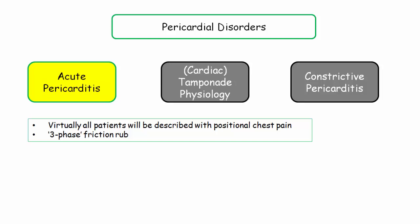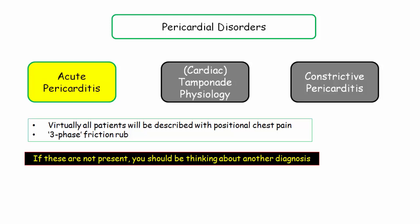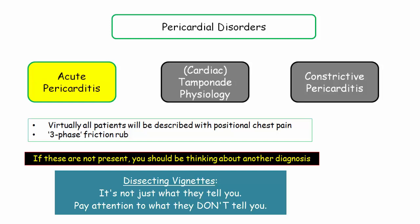So this is the key language of acute pericarditis. If these descriptors are not present, you should be thinking about other diagnoses. Remember, when you analyze questions, pay attention to what they tell you, and pay attention to what they don't tell you.